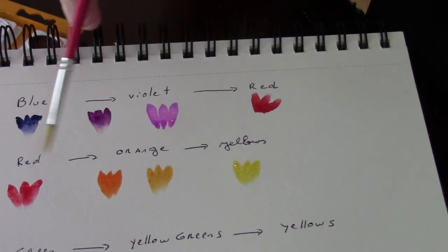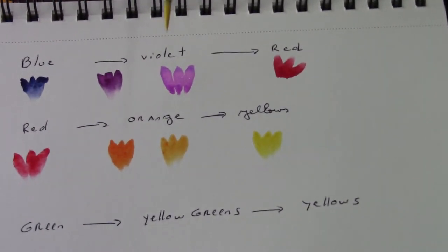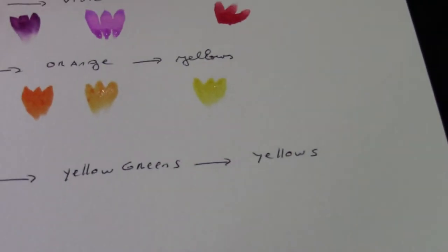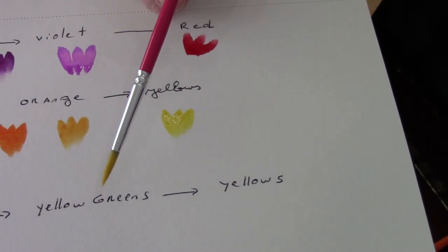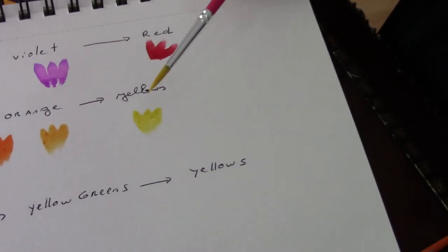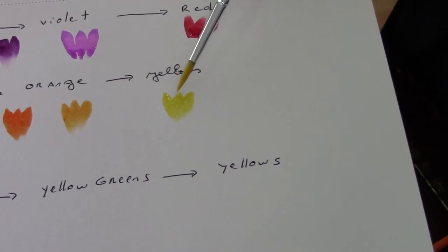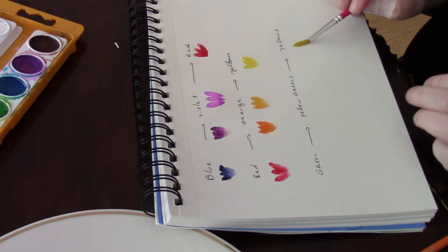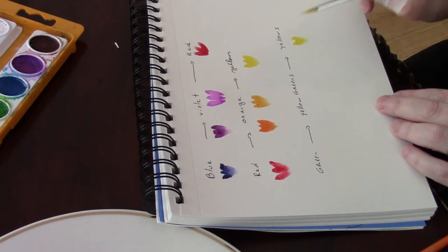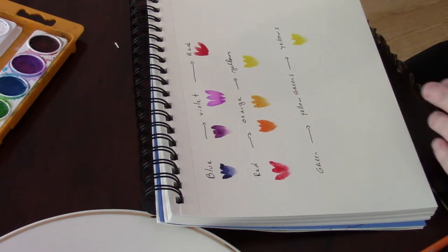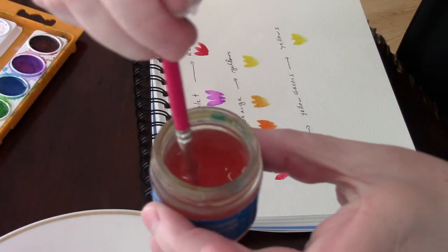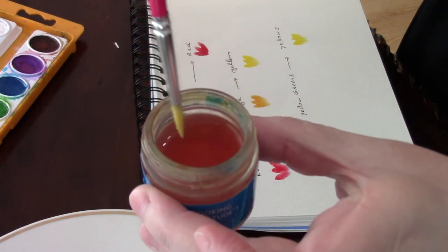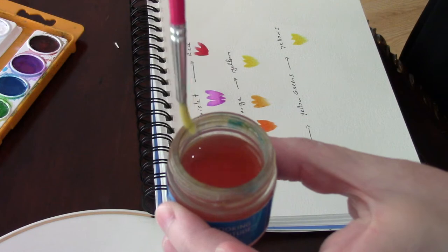The last part of our chart is going to be the green, yellow greens and yellows. Now I have in my brush, I still have yellow from this previous time so I'm just going to do it here again. I'm just going to create this true yellow little flower. I'm going to change my water because now I'm going to go into greens.